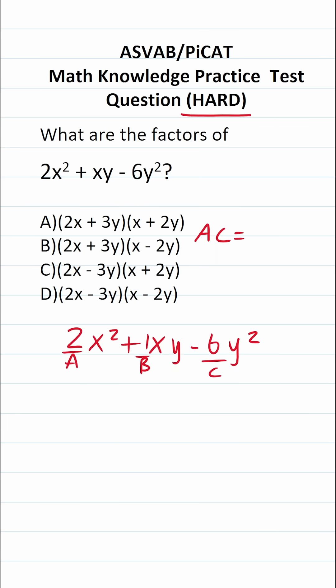The AC method says take A, multiply it by C. 2 times negative 6 is going to be negative 12. Identify B. B is right here, it's positive 1. And what we're looking for is two numbers that multiply to negative 12 in this case, but add to positive 1.